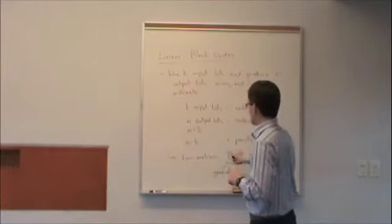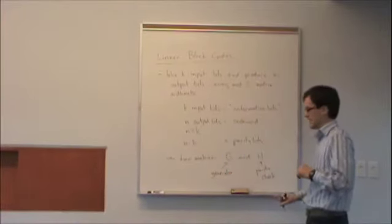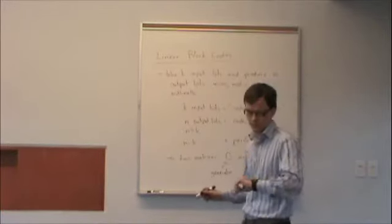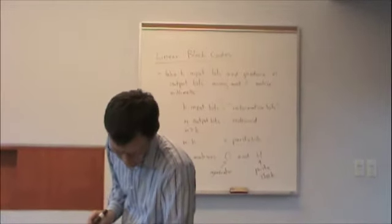G is used in encoding. G takes K input bits and produces N output bits. And H is used in decoding in a way that we'll talk about probably next class. But first, let's look at encoding.